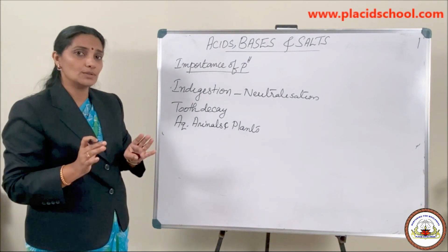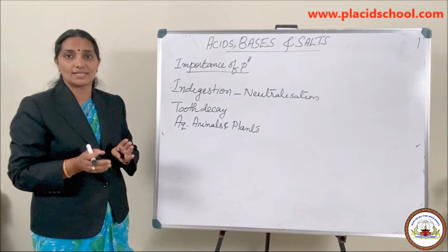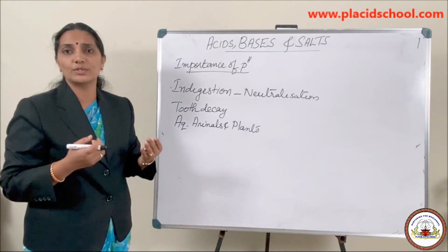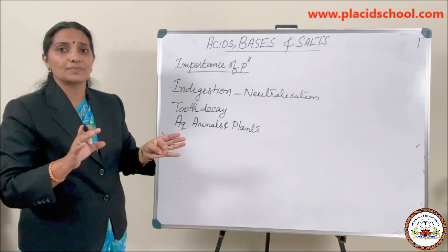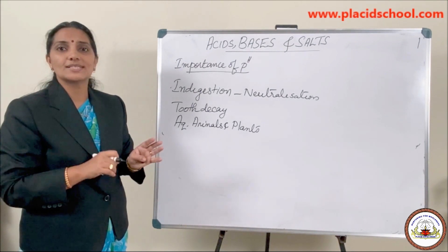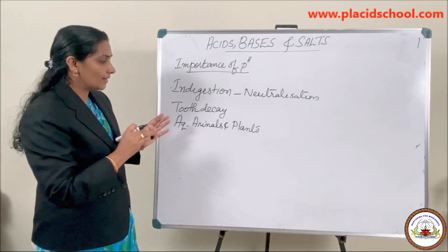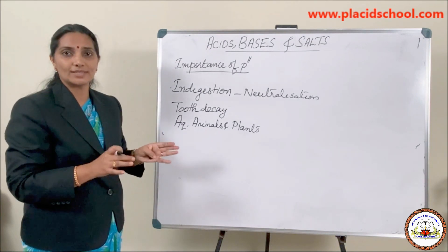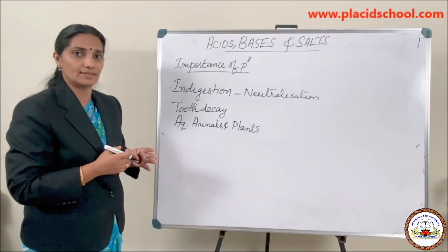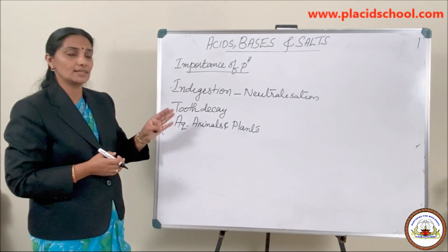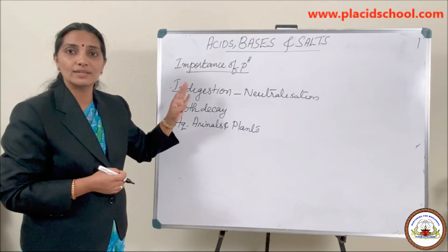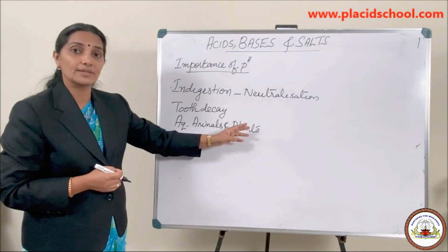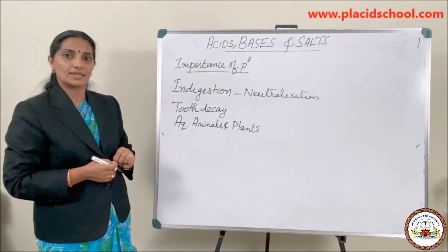Aquatic organisms also live within a particular pH range — around 5.6. If the pH value increases or decreases from 5.6, the entire metabolism changes. So when acid rain comes, the pH of the river water decreases and acidity increases. In such acidic conditions, plants and animals cannot survive and they die. So animals and plants are also affected by the change in pH.